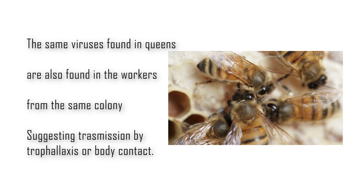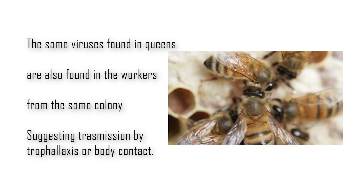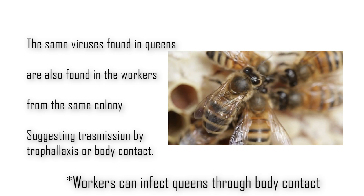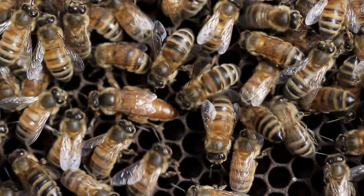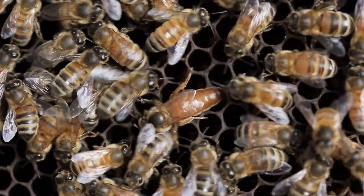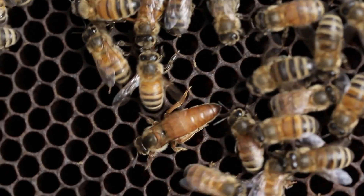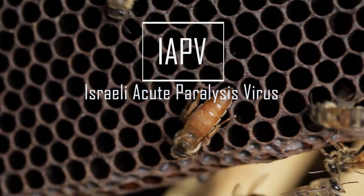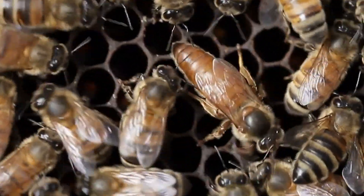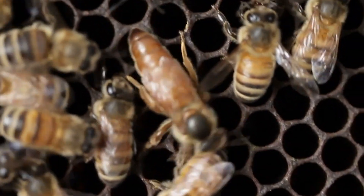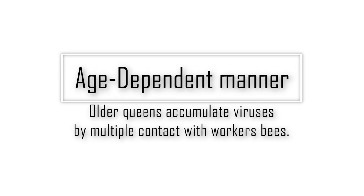In many cases, the same viruses detected in queen tissues can also be detected among workers of the same colony, suggesting that workers can infect queens through trophylaxis or body contact. Virus transmission through body contact between infected workers and queens has been demonstrated for at least one honeybee virus so far: IAPV. Because queens live much longer than worker bees, older queens will have more interaction with worker bees throughout their life in the colony, potentially accumulating viruses in an age-dependent manner.